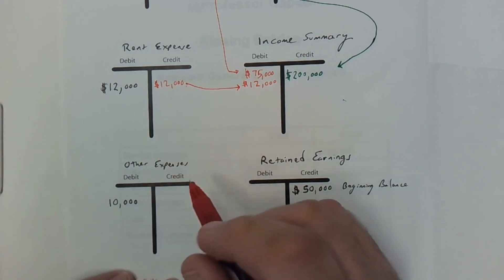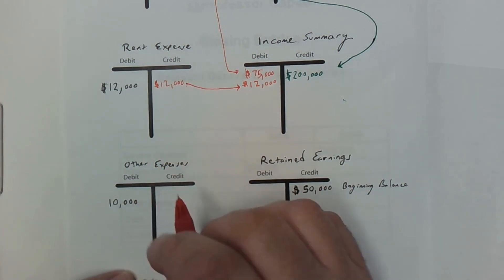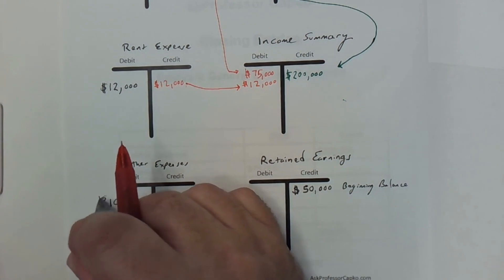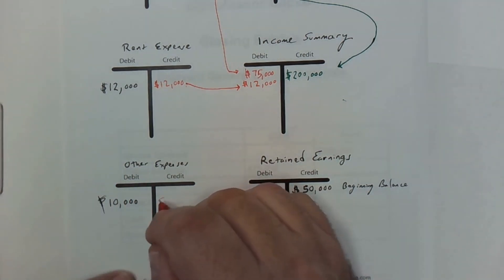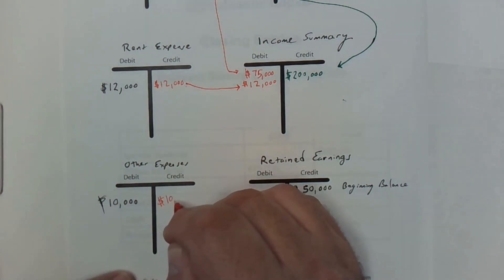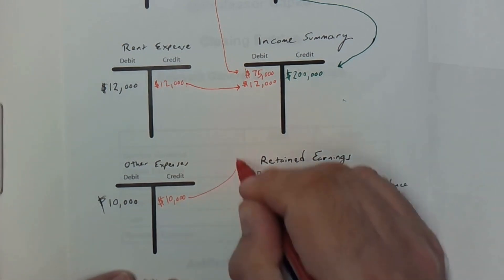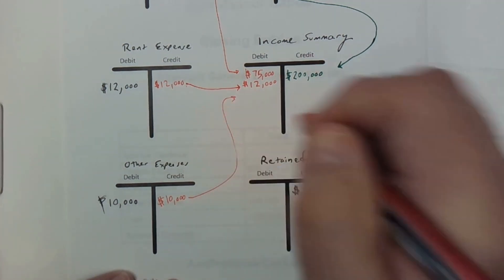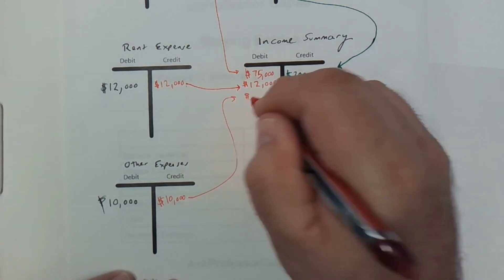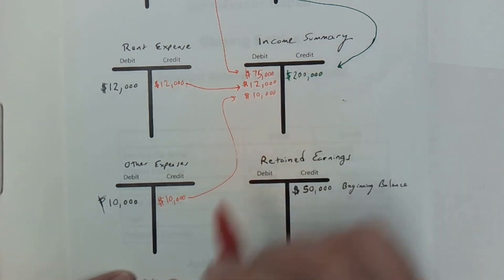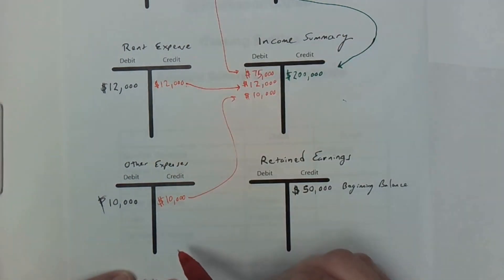All our other expenses are $10,000 sitting as a debit, so I'm going to credit $10,000 to close out our other expense account. Since I'm crediting that expense account, I'm going to debit our income summary account for $10,000. So all our expense accounts have now been zeroed out and they're ready for the new year.